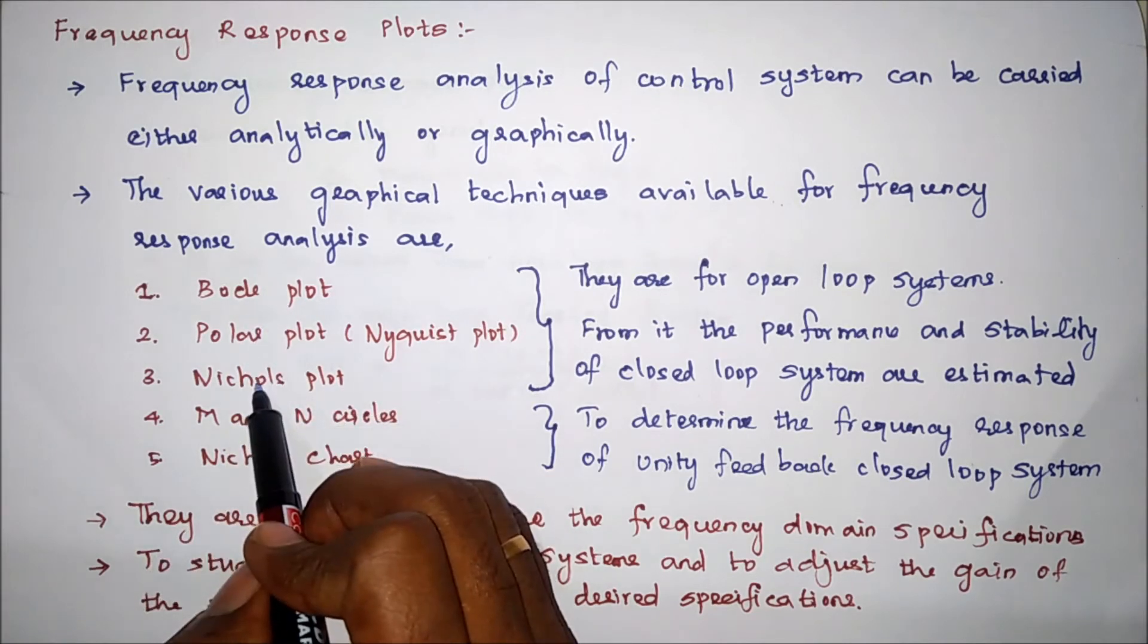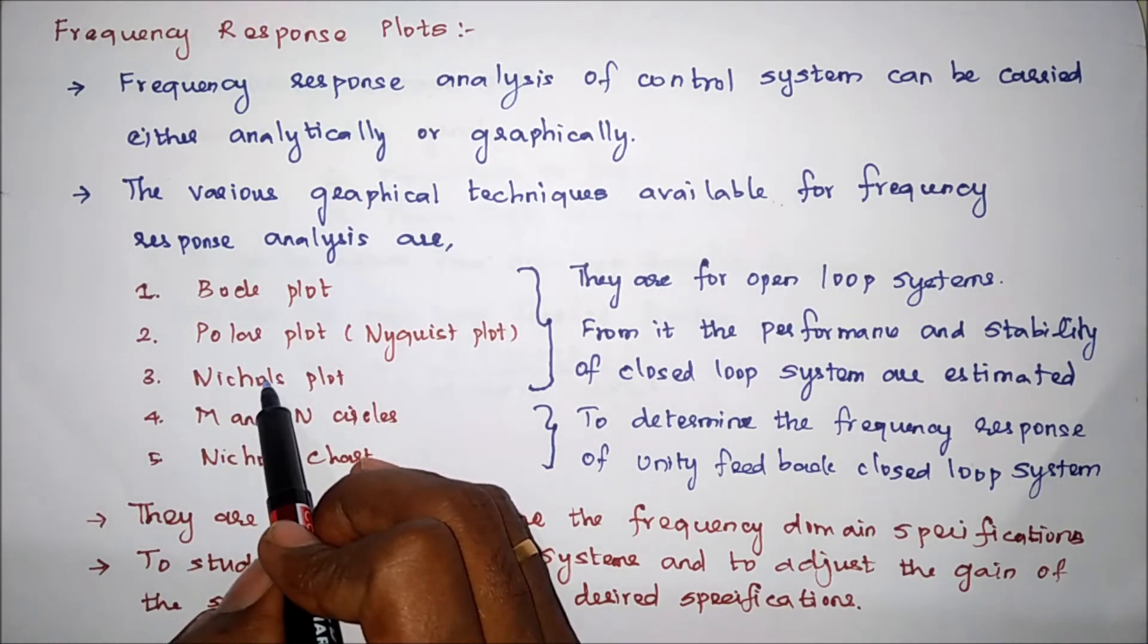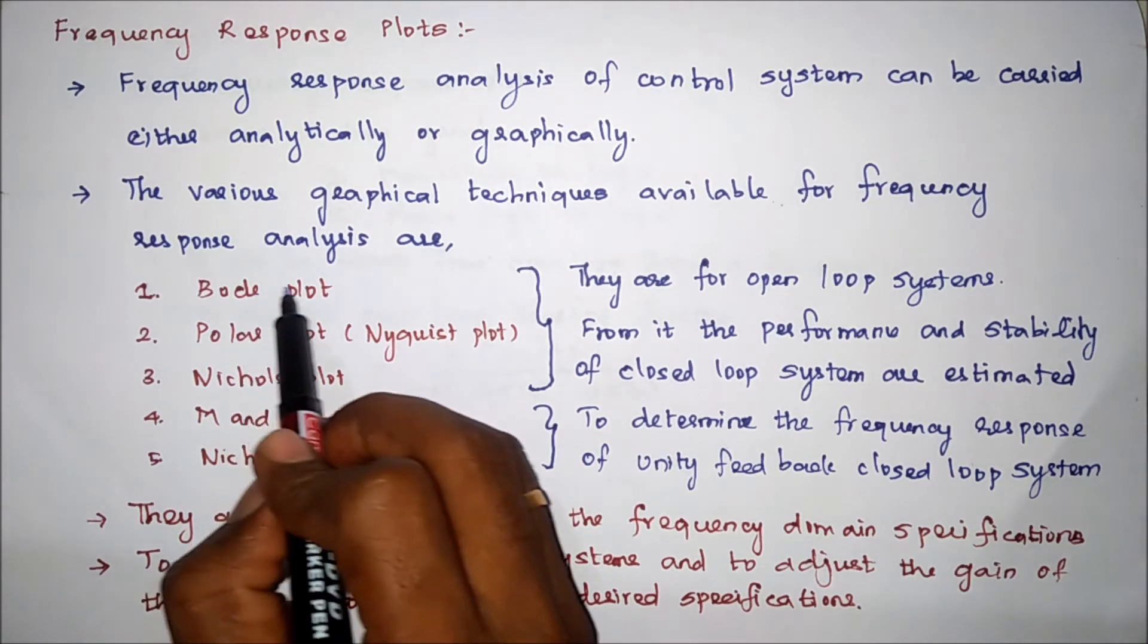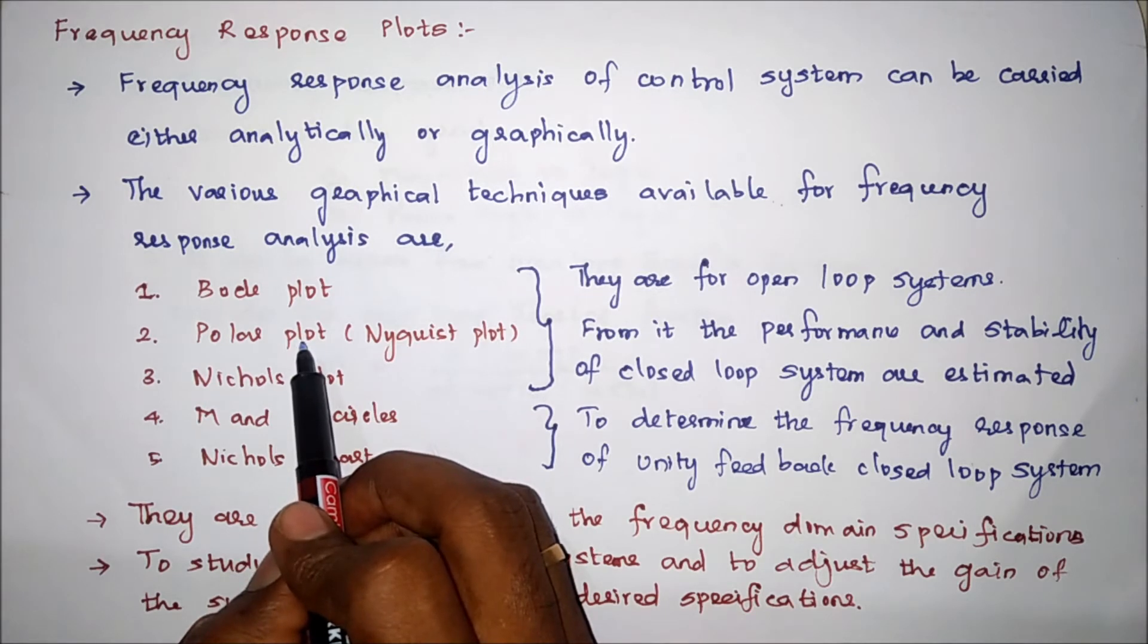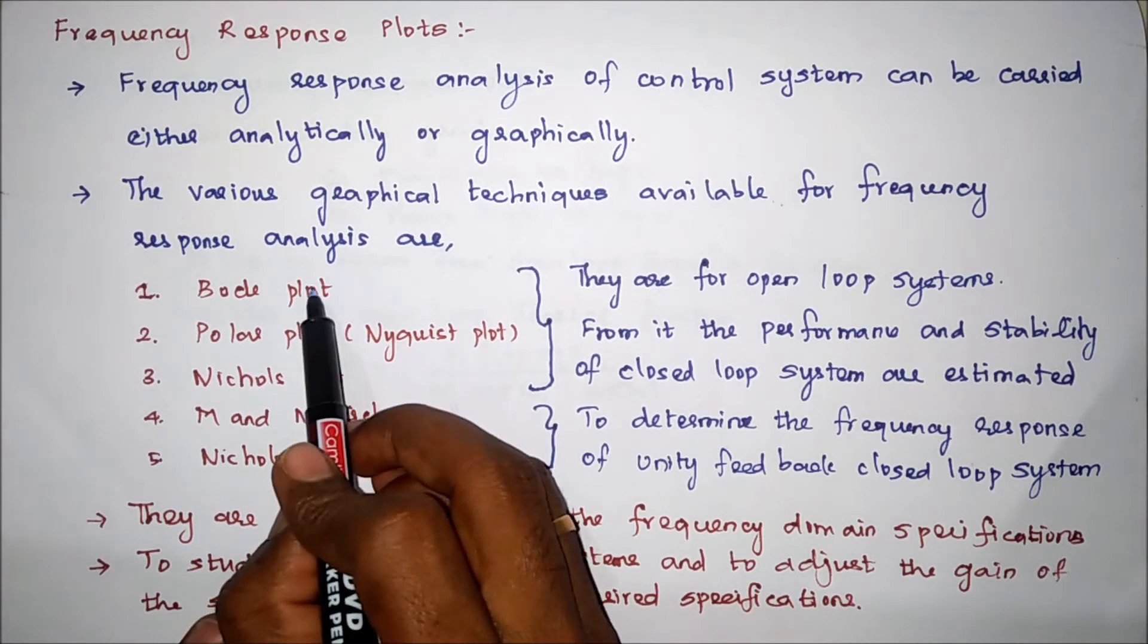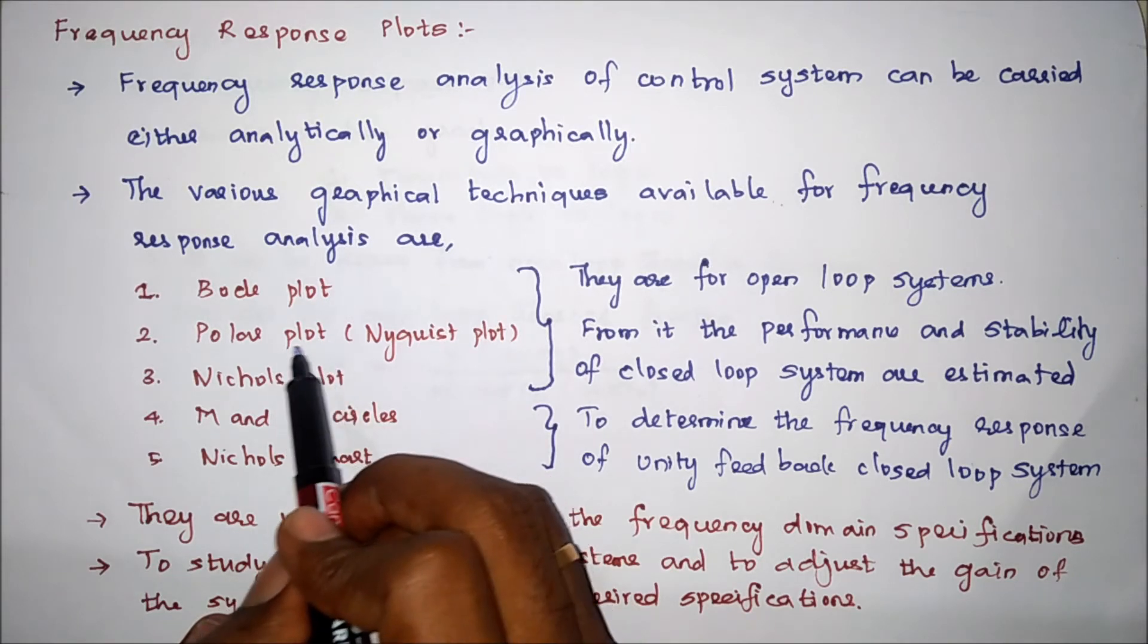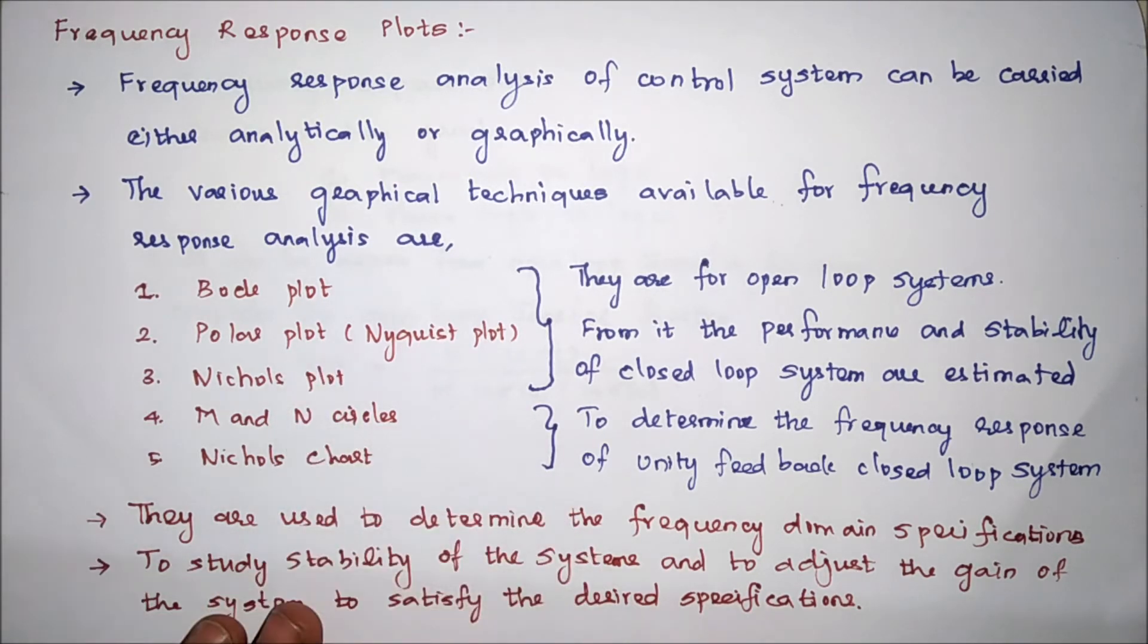The first three are for open loop systems. From the performance and stability of the open loop system, the closed loop system can be easily estimated. From the open loop performance and stability, we can calculate the stability and performance of the closed loop system also.